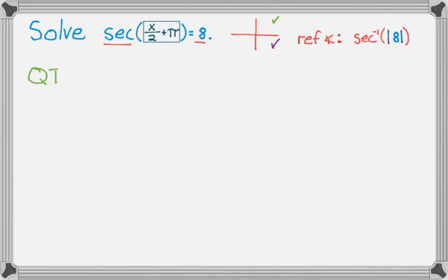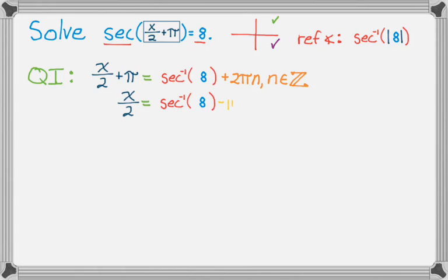So for quadrant 1, the thing in the box could be equal to, in the first quadrant, the angle is actually just equal to the reference angle. So that's the inverse secant of 8, and then we can wrap it around. But now it's solved, so I'm going to subtract π from both sides, get inverse secant of 8 minus π plus 2πn, and n is an element of the integers.